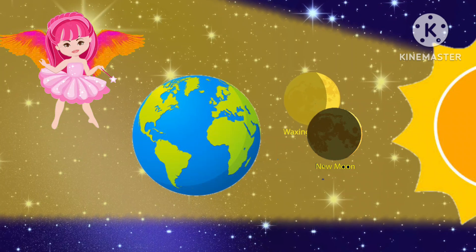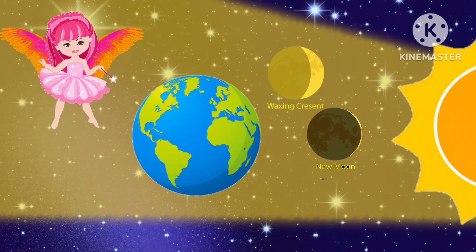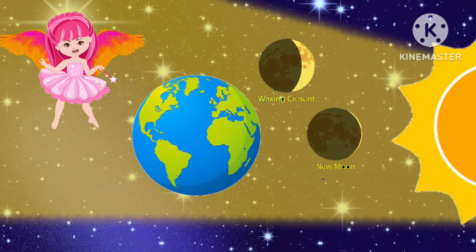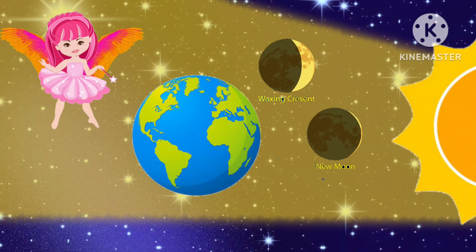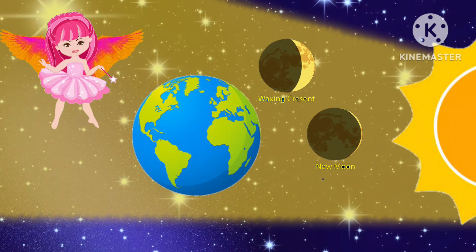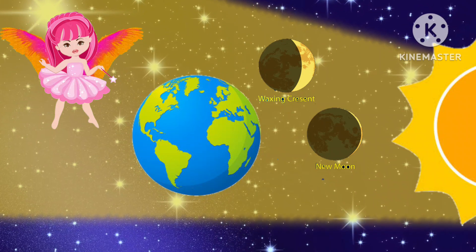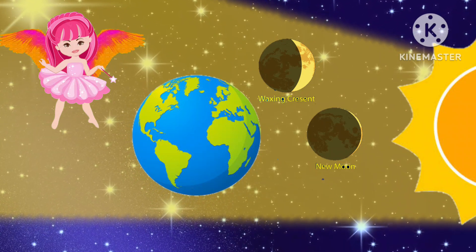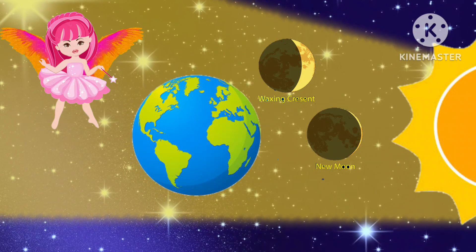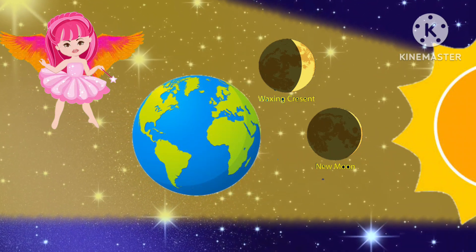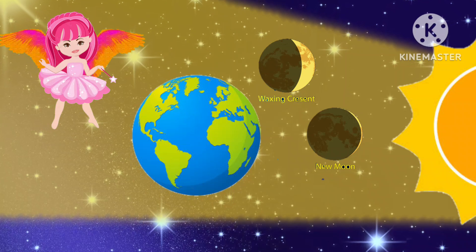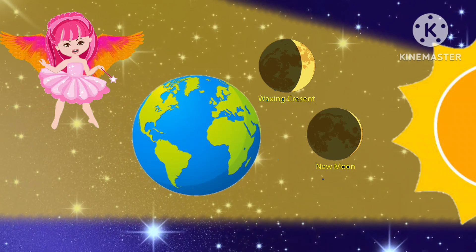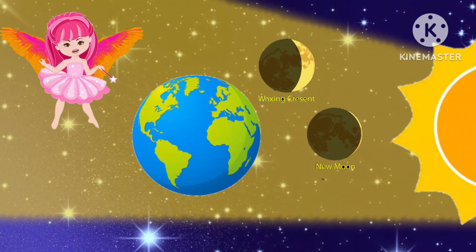As the moon continues to orbit and moves a little ahead after two or three days, some light from the sun starts to fall on parts of the moon. The moon appears in a crescent shape. This phase is called waxing crescent.